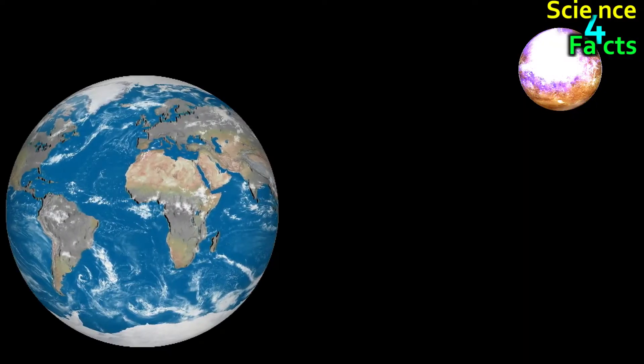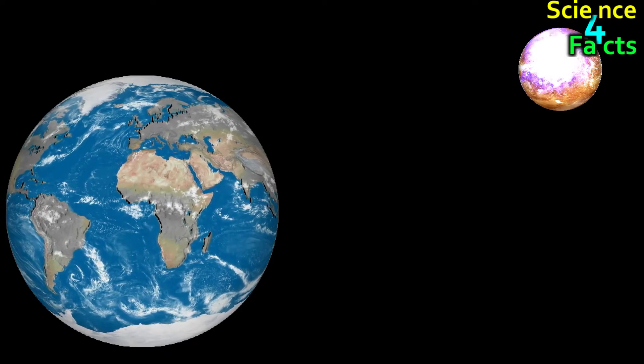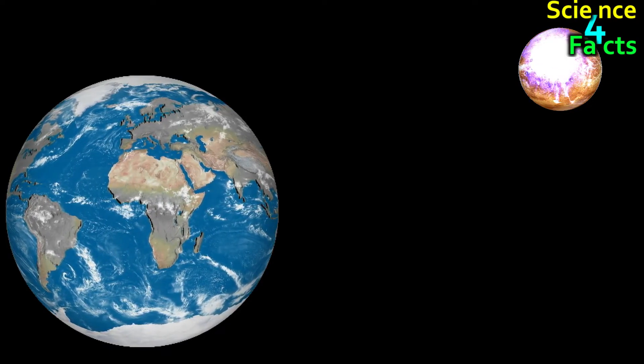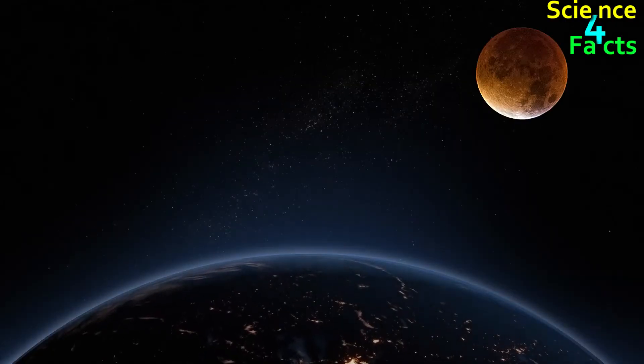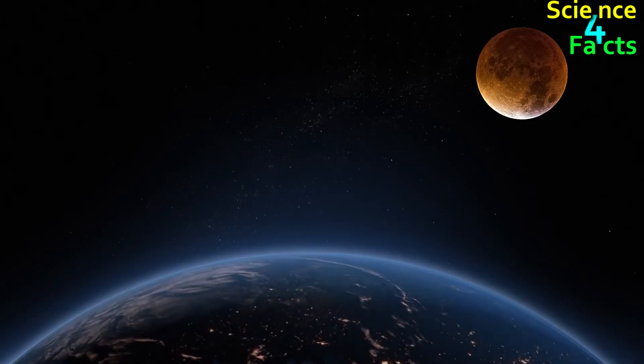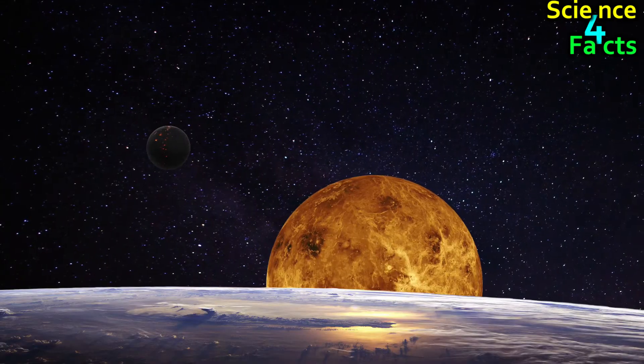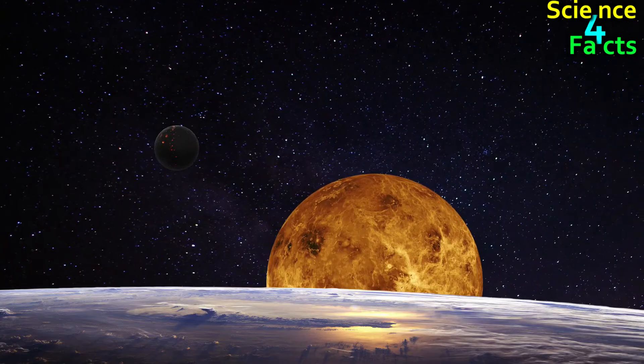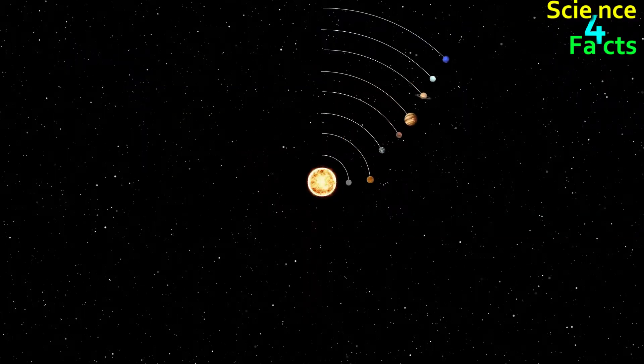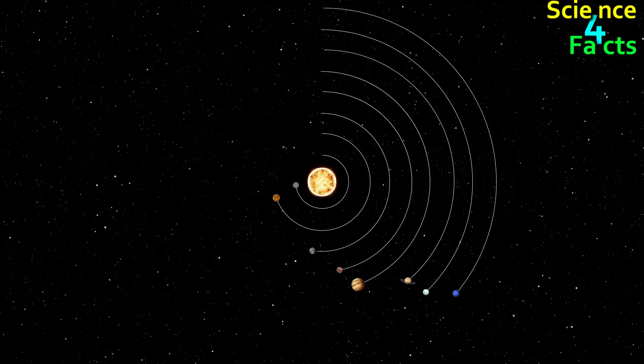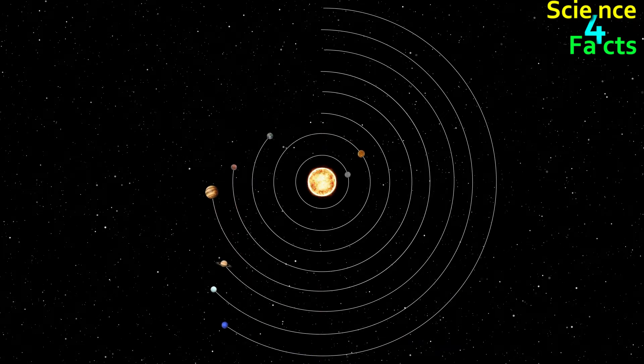Venus' proximity to Earth is a key factor in why it appears bright and big as viewed from Earth. When it is at its closest to Earth, Venus could come within 41 million kilometers closer than any planet in the solar system. But even when it is at its most distant, it is only 261 million kilometers from Earth.